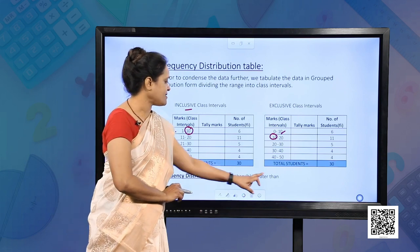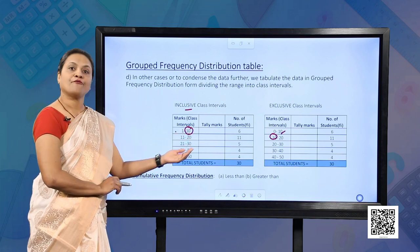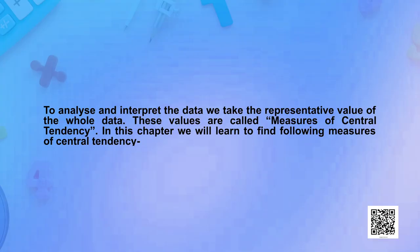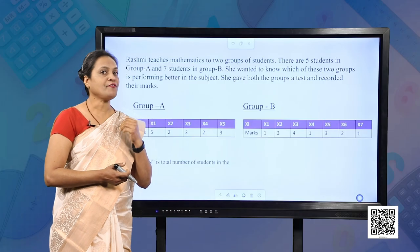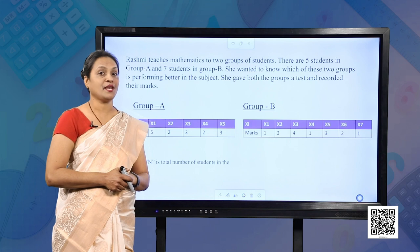We can form less-than and greater-than cumulative frequency distribution tables using these tables, and we will look at that in our next session. When it comes to analysis and interpretation of data, we need some representative value, because just by looking at the data we cannot draw any result or take a decision. These representative values of data are called measures of central tendency. One of the measures of central tendency is mean, so let us understand the meaning of mean.